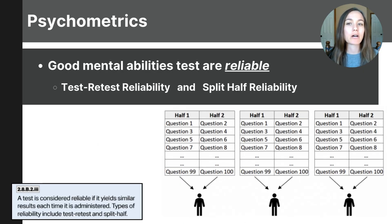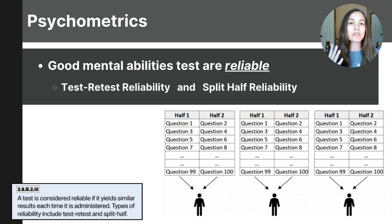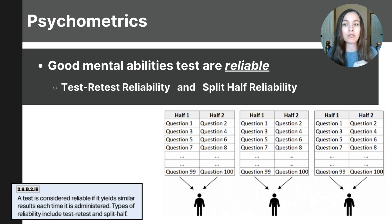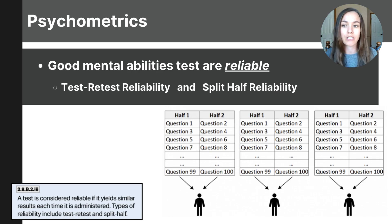When we talk about good psychological tests, one important quality we look for is reliability. Reliability refers to how consistent the test results are — a reliable test would give similar results if administered multiple times or split into different parts. For example, if you took a personality test and each time you got different results, that would be an unreliable test. Or if you took an IQ test and got widely different scores each time, it would be hard to trust the results.